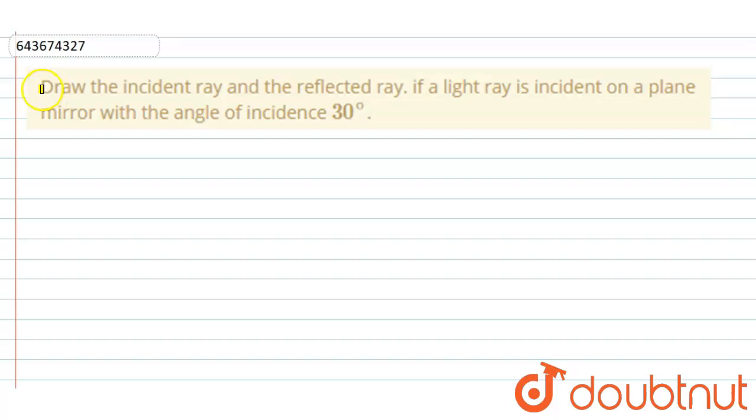So here the question is: draw the incident ray and the reflected ray if a light ray is incident on a plane mirror with angle of incidence 30 degrees. We have to draw the incident ray and the reflected ray when a ray of light is incident on a plane mirror with angle of incidence 30 degrees.